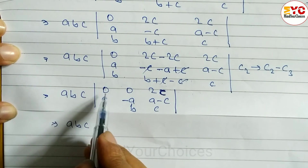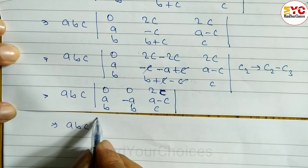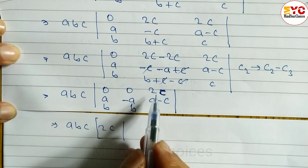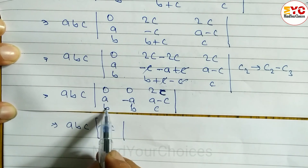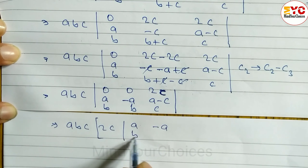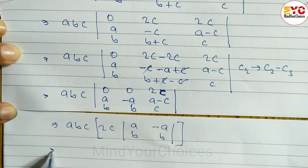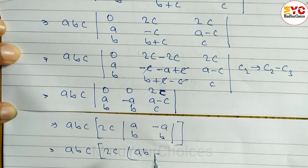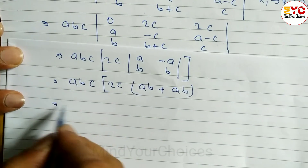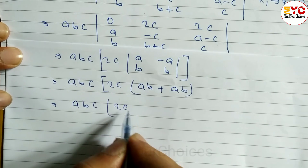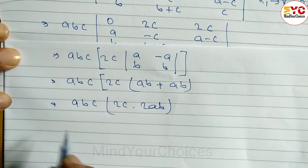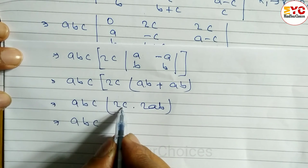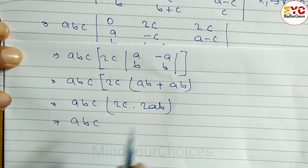To find the cofactor of 2c: the sign pattern is positive, negative, positive, so the cofactor of the element 2c (position row 1, column 3) is positive. The minor of 2c is the 2×2 matrix with elements a, −a, b, and b. The determinant of this minor is: a×b minus (−a×b) = ab + ab = 2ab. So we have abc × 2c × 2ab.